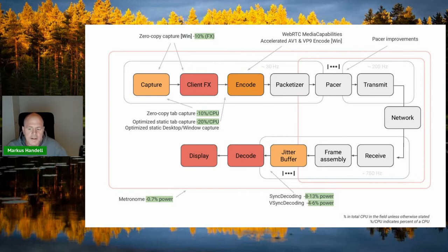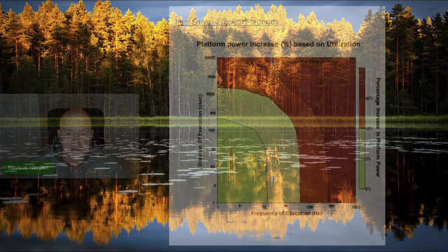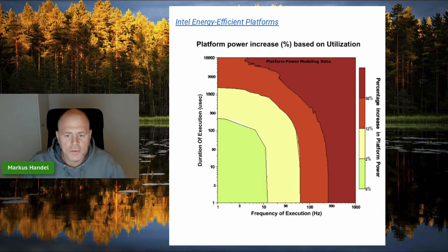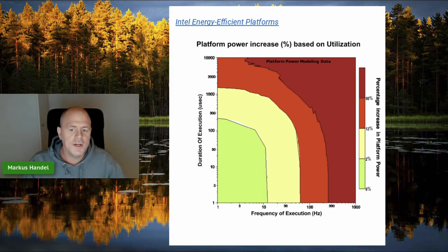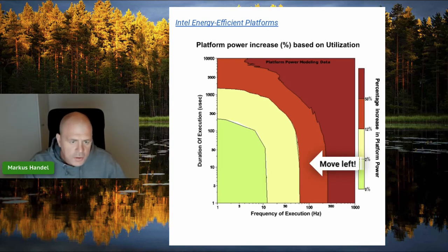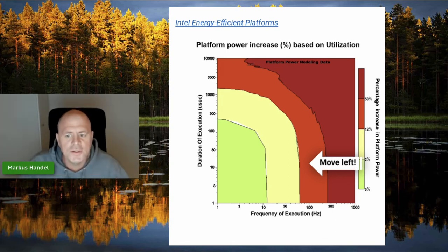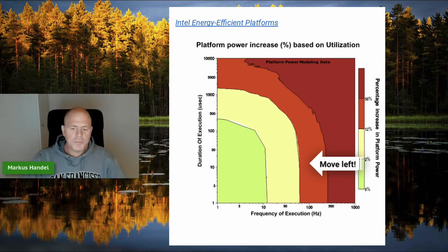Here's a picture of the basic simplified organization of the RTC pipeline, explaining the basic components involved in transferring yourself from webcam to remote screen. The metronome aligns all non-critical timer activity to 64 Hz, and the sync decoding projects align decodes to happen on trigger — most impactful on very high tile count meetings. A slide from Intel's energy efficient platforms shows platform power usage as a function of execution frequency and duration: don't run too long, and when you do run things, don't run too often. When we measured the frequency of invocation in Chrome, we found RTC was in a not-so-flattering area of that graph.